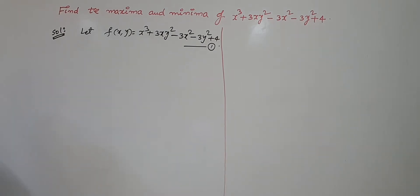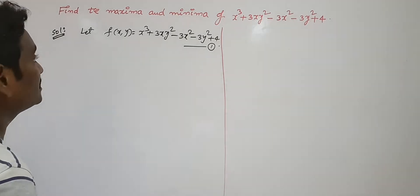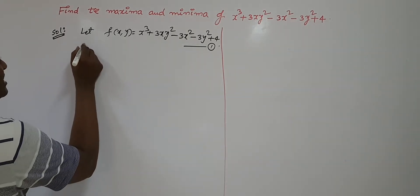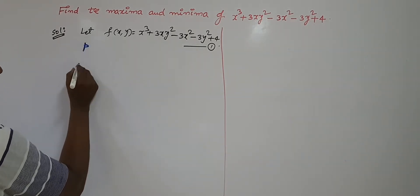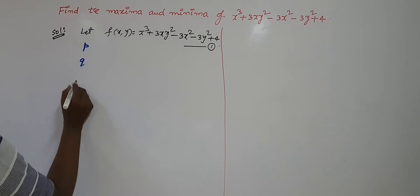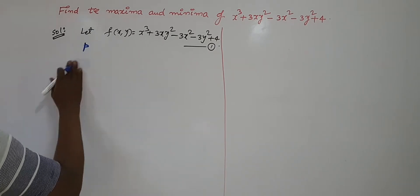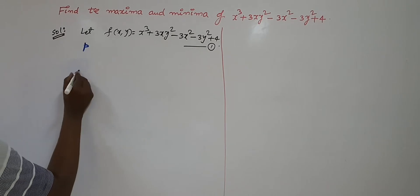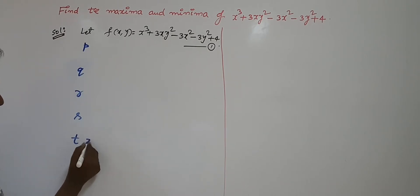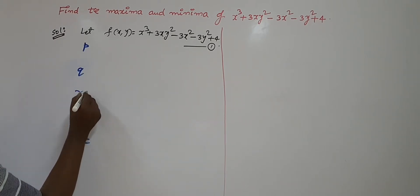To get the maxima and minima, first of all we have to find out the stationary points. Before finding stationary points, find out the first order and second order partial derivatives, which are represented by p, q, r, s, t. We have to find out all these things.